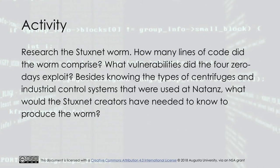The activity for this module asks that you research the Stuxnet worm. How many lines of code did the worm comprise? What vulnerabilities did the four zero-days exploit? Besides knowing the types of centrifuges and industrial control systems that were used at Natanz, what would Stuxnet's creators have needed to know to produce the worm?